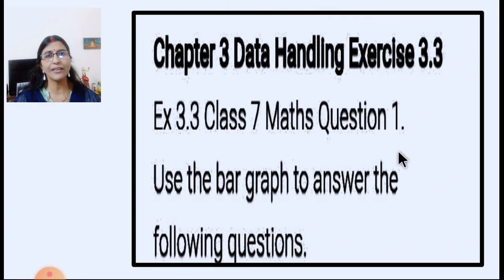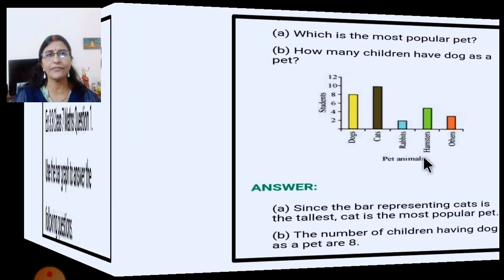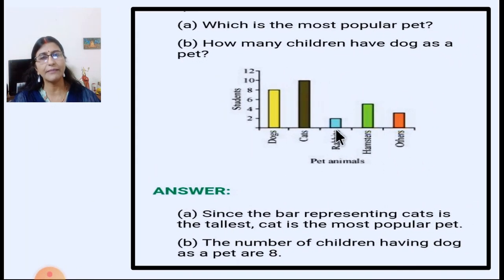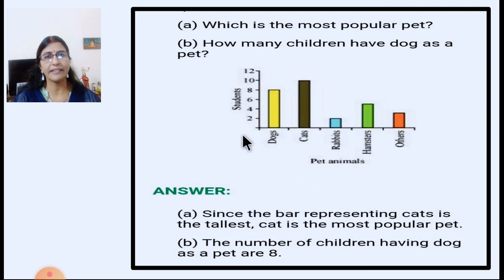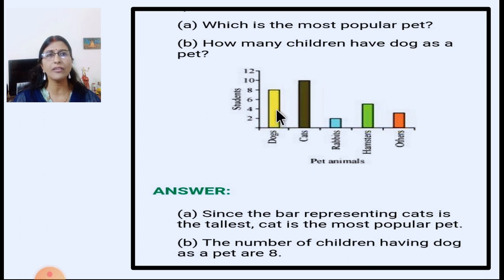Now we will do Exercise 3.3, question number 1: Use the bar graph to answer the following questions. Which is the most popular pet? The bar representing cats is the tallest, so cat is the most popular pet. The x-axis shows pet animals and the y-axis shows number of students. How many children have a dog as a pet? The bar for dog reaches up to 8, so 8 children have a dog as a pet.